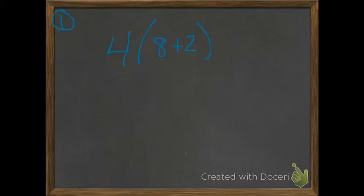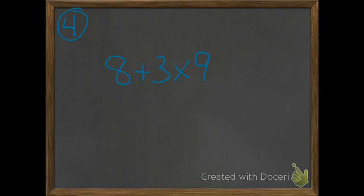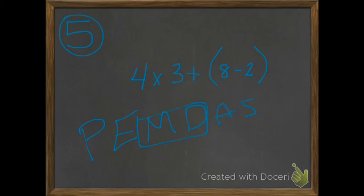Your turn to do five problems: number 1 is 4 times the parentheses 8 plus 2; number 2 is 8 divided by 2 times 4; number 3 is 4 times 8 plus 3; number 4 is 8 plus 3 times 9; number 5 is 4 times 3 plus 8 minus 2. I hope you understand what we're doing — we will continue to practice. Just remember: please excuse my dear Aunt Sally. Multiplication and division are teamed up, addition and subtraction are teamed up — do those from left to right. Good luck, see you later.